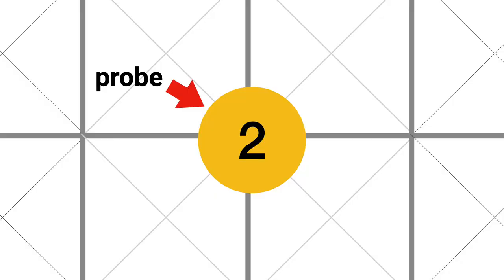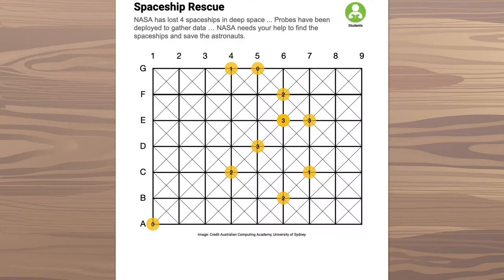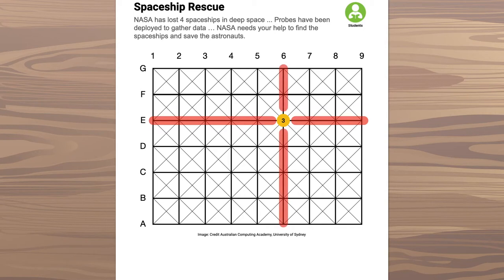The yellow dots are the probes, and each probe is reporting back to you how many spaceships it can see. So this probe, for example, can see exactly three of the lost spaceships somewhere along the lines going horizontally, vertically, and diagonally out from its location.